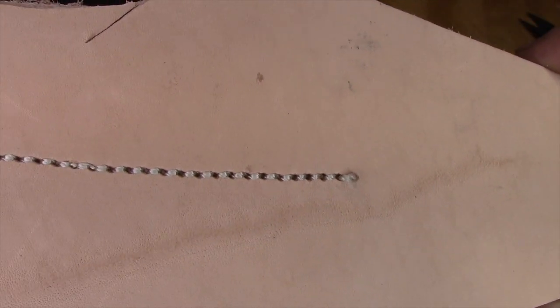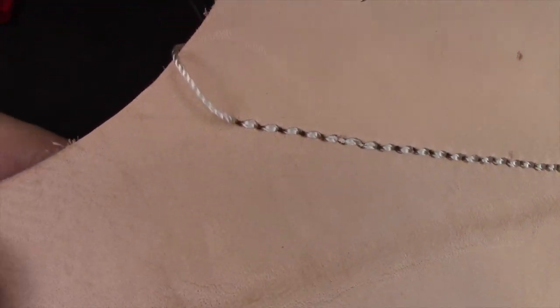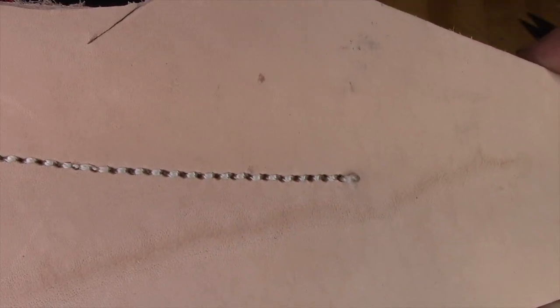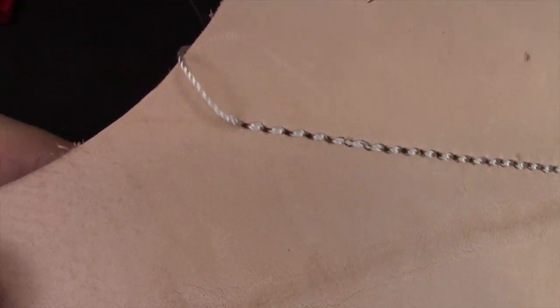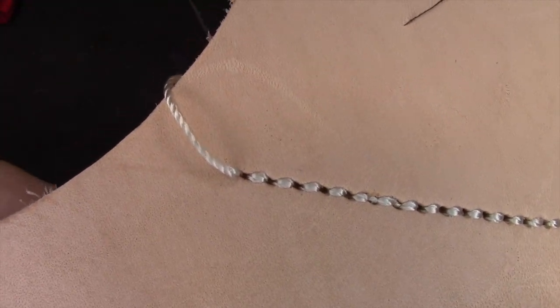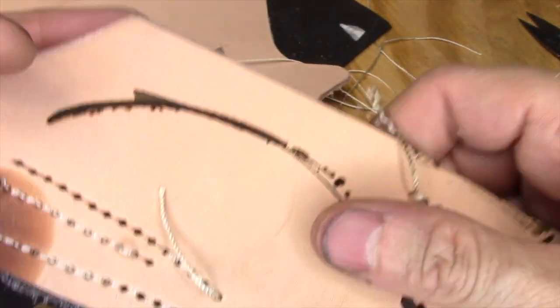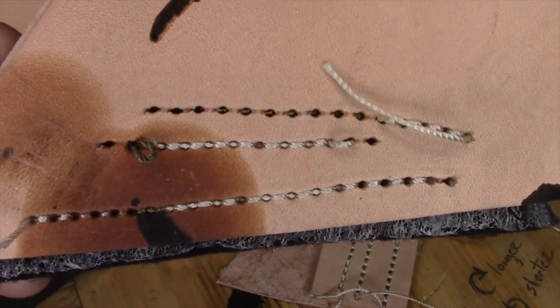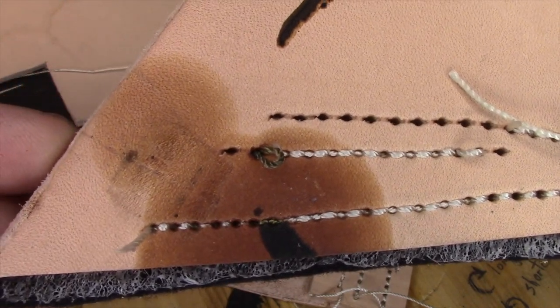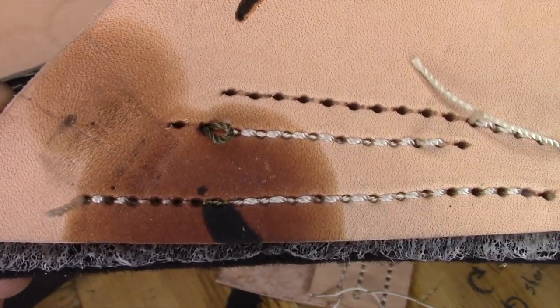At one point, I even took the screws off the tensioners completely, springs and everything, and tightened down my bottom bobbin tensioner, which I never touched, as much as I could. And it didn't do anything. It still showed that I had too much tension on that top thread.